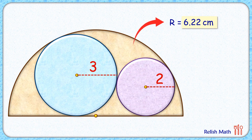And thus the radius of our original brown semicircle is 6.22 centimeters. I hope you enjoyed the solution. I will see you in the next video — till then, bye bye!